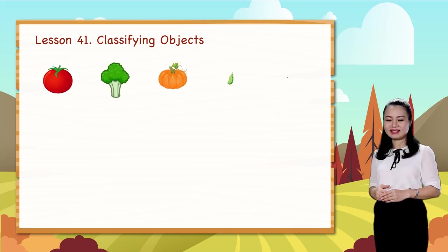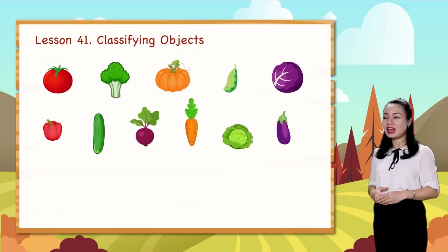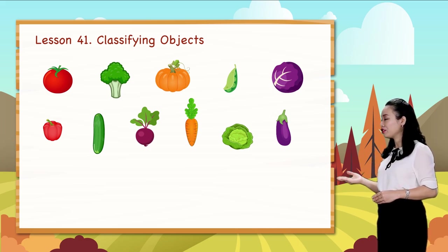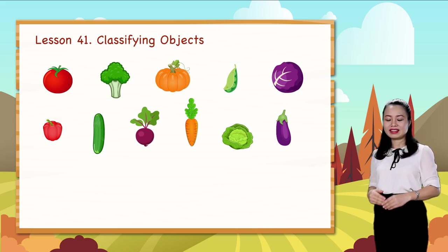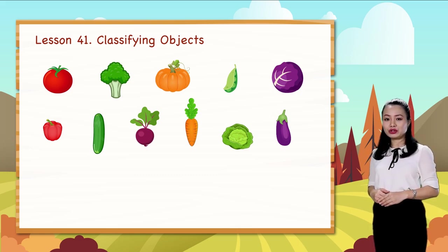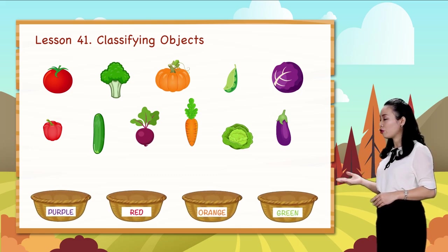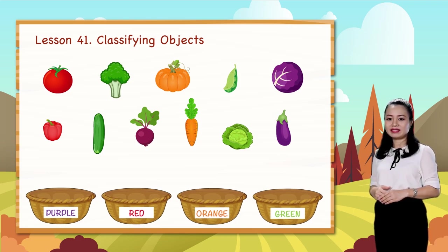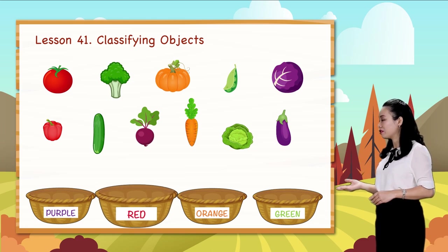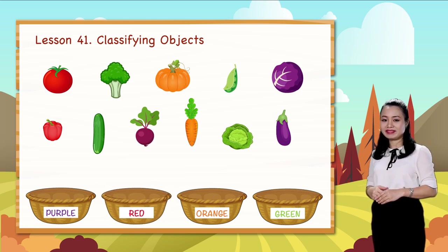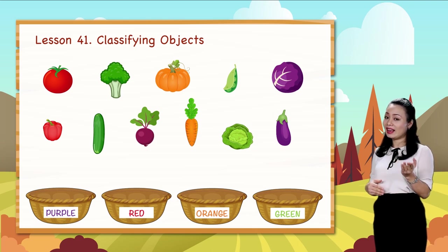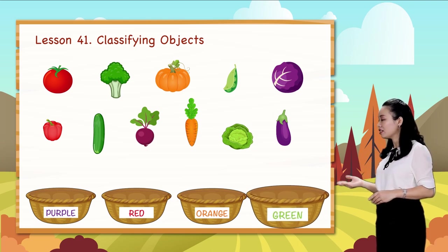Look! We have a bunch of vegetables. They are all different. Now we classify this bunch into four groups: a purple group, a red group, an orange group, and a green group.